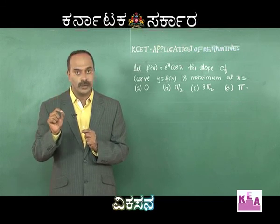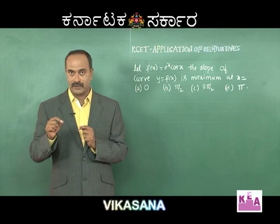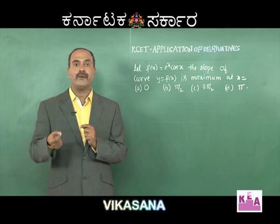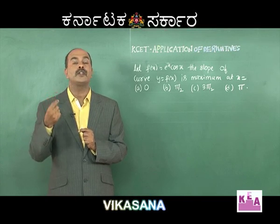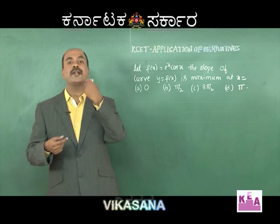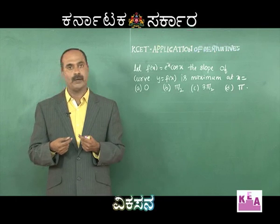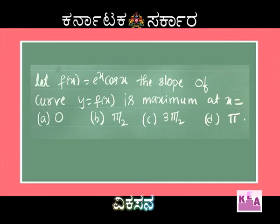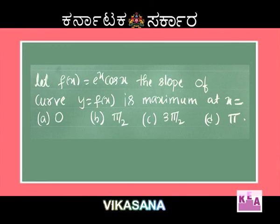To find maximum slope, you have to find out f'(x), then make it g(x), then find out maximum and minima of g(x). The question is: let f(x) = eˣ cos x. The slope of the curve y = f(x) is maximum at x = 0, π/2, 3π/2, or π.